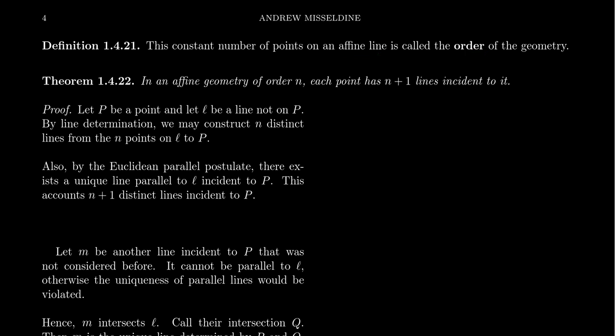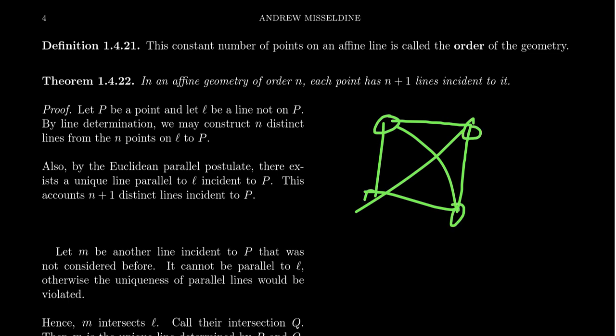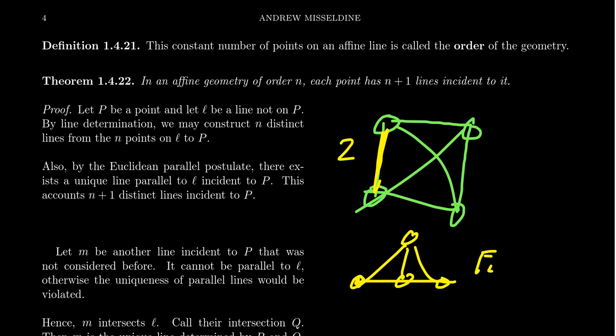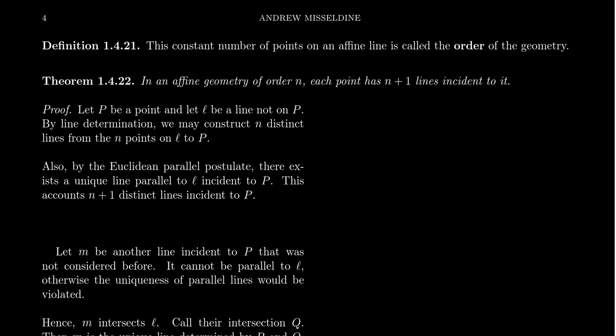The four-point geometry we introduced previously — every line contains exactly two points — is really the order-2 affine geometry. Going forward, we'll refer to it as the order-2 affine geometry, not to be confused with four-point fan geometry F4. Young's geometry, which we've talked about before, is order-3 affine geometry. But is there an order-4, order-5, or order-6 affine geometry? We'll say more about those in a little bit.